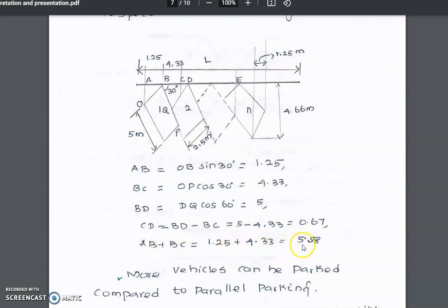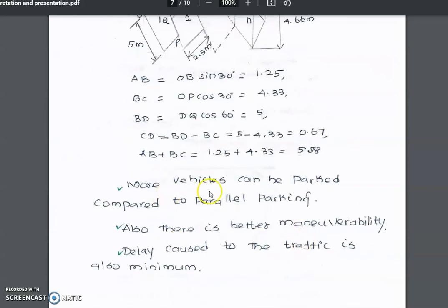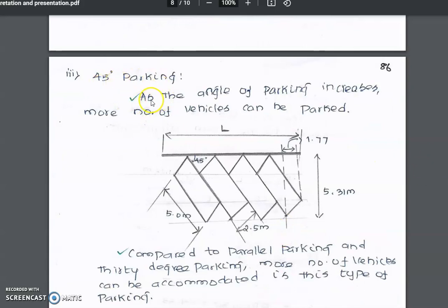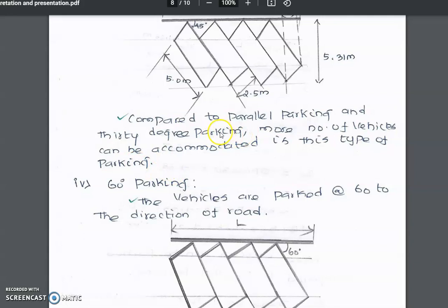More vehicles can be parked compared to parallel parking, with better maneuverability and minimum delay to traffic. Next is 45-degree parking. As the angle of parking increases, more vehicles can be parked. In congested areas, compared to parallel and 30-degree parking, more vehicles can be accommodated in 45-degree parking.